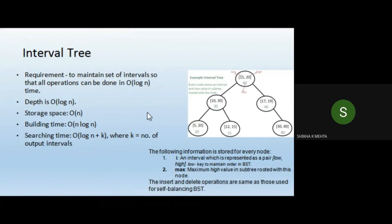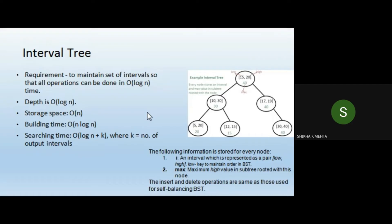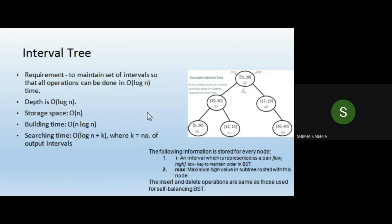Since an interval is represented using a low and a high value, when creating the binary search tree we consider the low value of every range as the key — we ignore the higher value during BST construction. The second piece of information stored in each node is the maximum high value in the subtree rooted at that node.